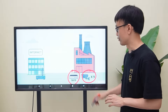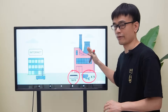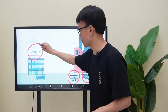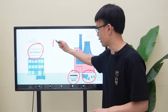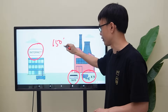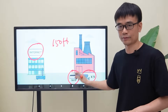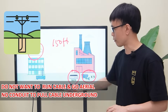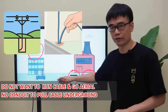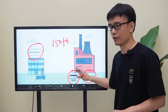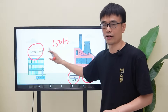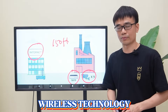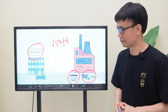The problem is there is no internet service in this factory. There is internet in the second building, about 150 feet away. The client doesn't want to pull cable over the sky or bury cable underground to bring the network video recorder to the network in the second building. So wireless technology becomes almost the only option.